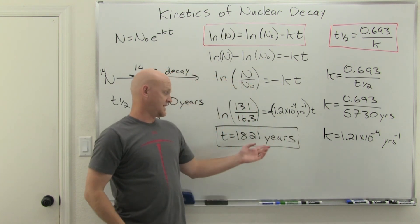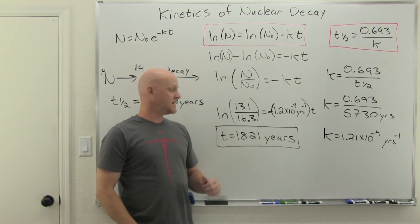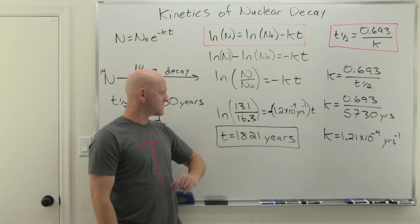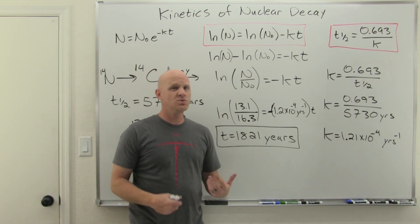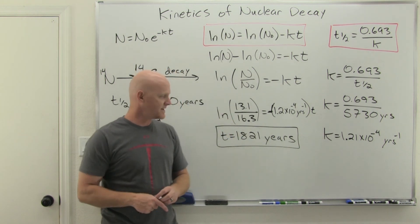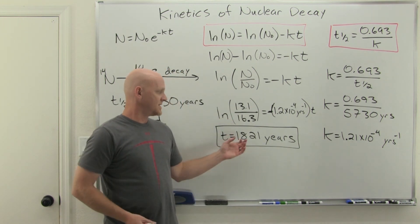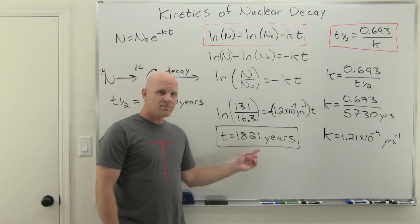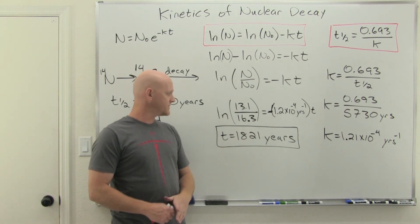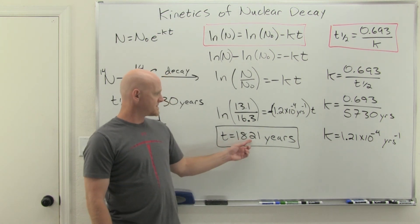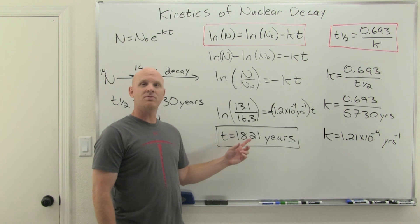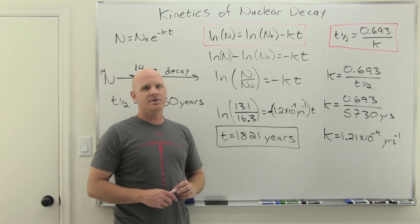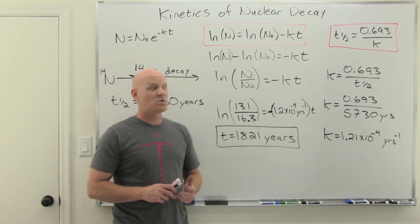Counting backwards 1,821 years, this piece of cloth dates to somewhere around 200 A.D. The older the object gets, the more approximate this dating becomes, but for something of this age it's going to be fairly accurate.